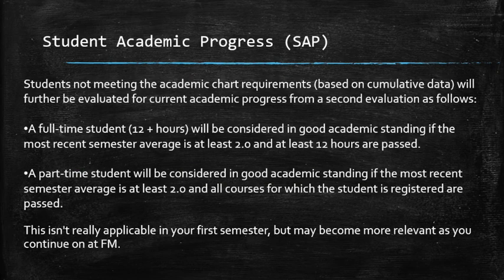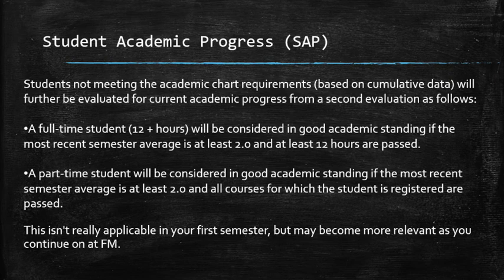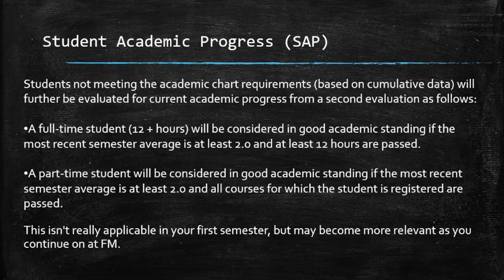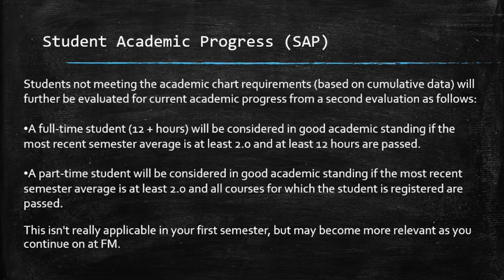Students not meeting the academic chart requirements based on cumulative data will be further evaluated for current academic progress in a secondary review. A full-time student (12 or more hours) will be considered in good academic standing if the most recent semester average is at least 2.0 and at least 12 hours are passed. A part-time student will be considered in good academic standing if the most recent semester average is at least 2.0 and all courses for which the student is registered are passed — essentially 100% completion and a 2.0.